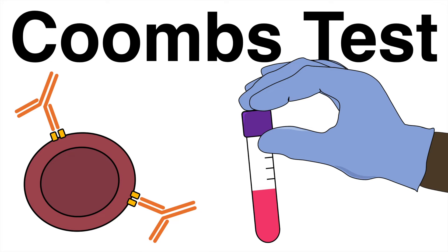The Coombs test is a diagnostic test used to detect antibodies attached to the surface of red blood cells. It helps to identify autoimmune hemolytic anemia and other immune-mediated hemolytic disorders. The test is also used to verify blood group compatibility.